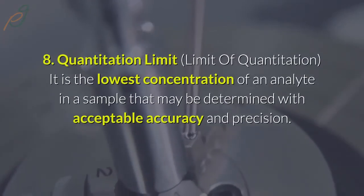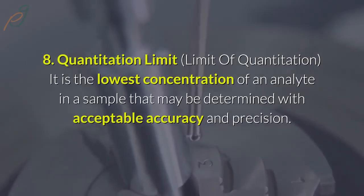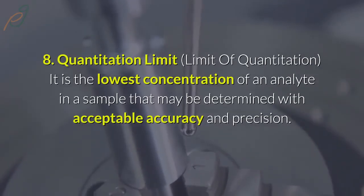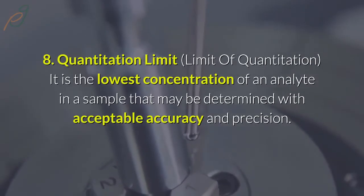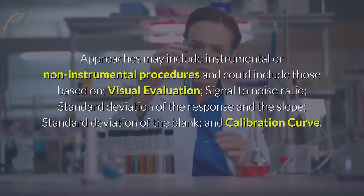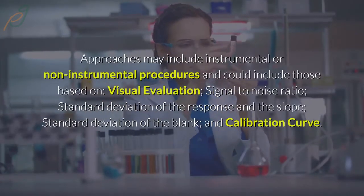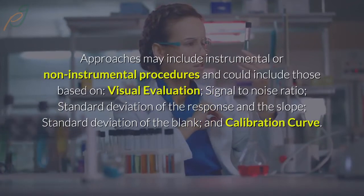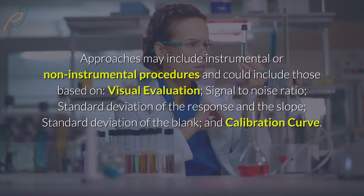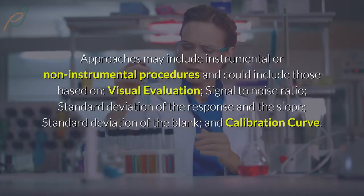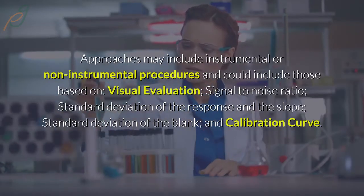8. Quantitation limit (limit of quantitation): It is the lowest concentration of an analyte in a sample that may be determined with acceptable accuracy and precision. Approaches may include instrumental or non-instrumental procedures, and could include those based on visual evaluation, signal-to-noise ratio, standard deviation of the response and the slope, standard deviation of the blank, and calibration curve.